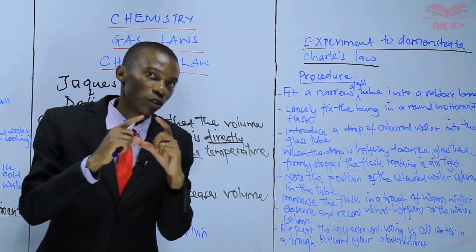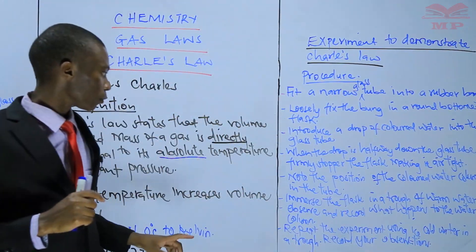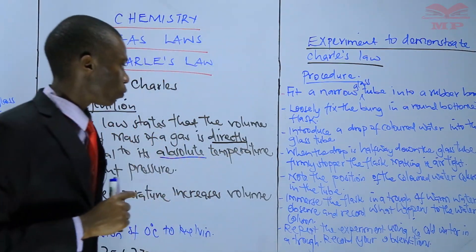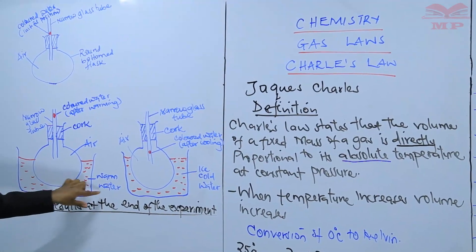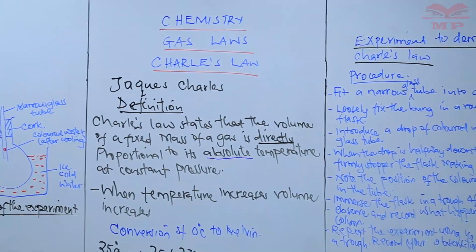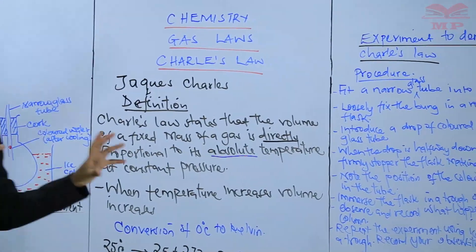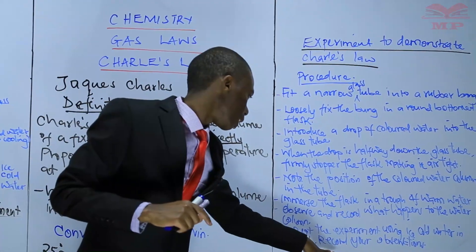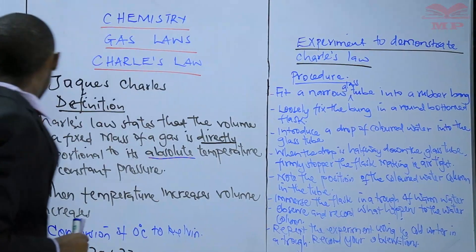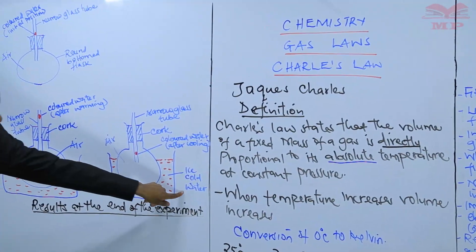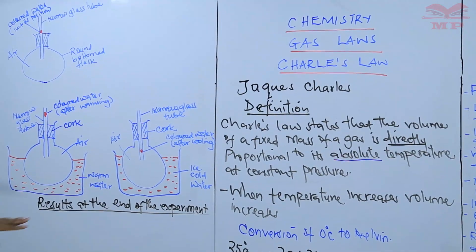Note the position of the coloured water column in the tube. Next, immerse the flask in a trough of warm water, then observe and record what happens. After that, repeat the whole procedure using ice cold water in the trough instead of warm water, and observe what happens. These two diagrams show the results at the end of the experiment.